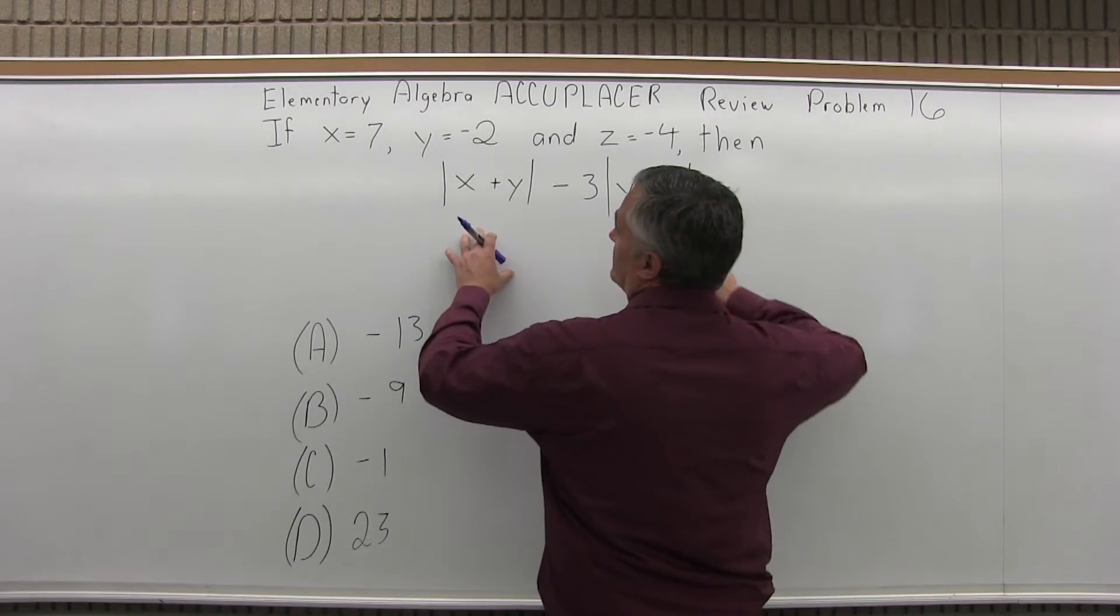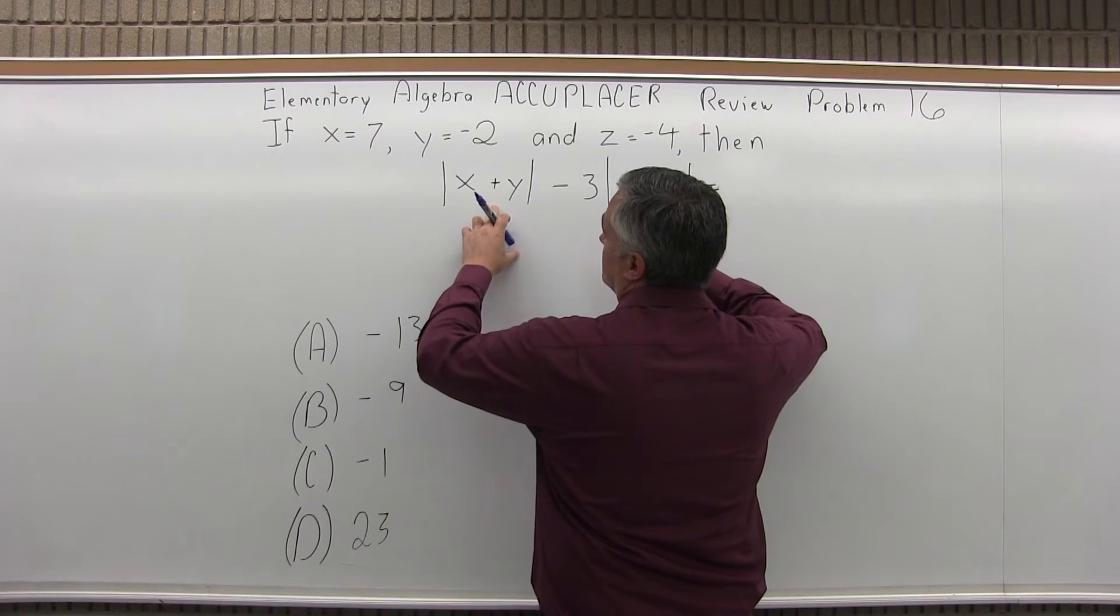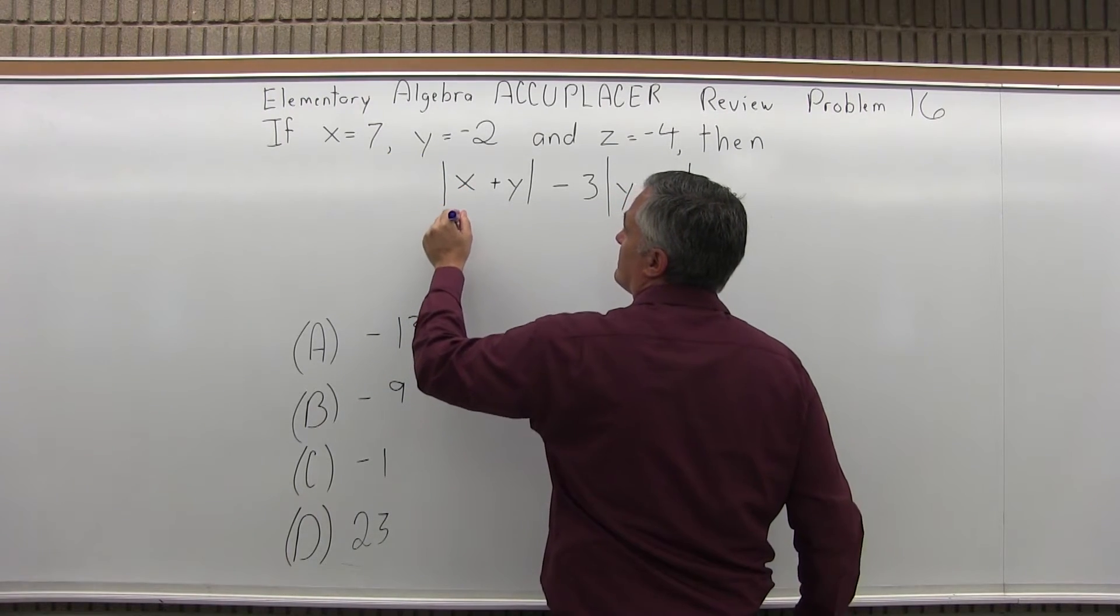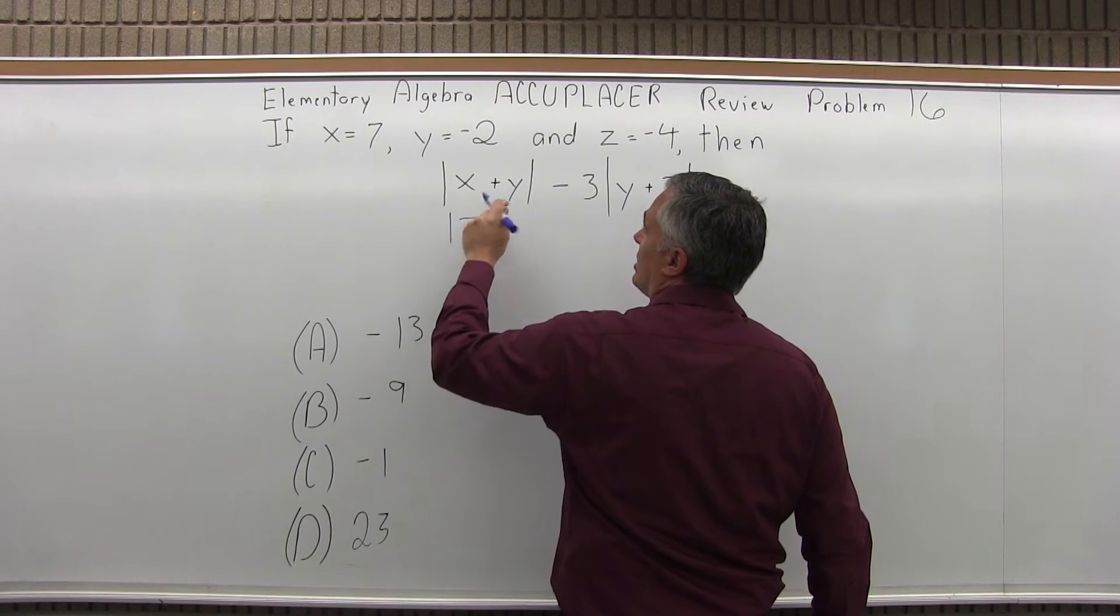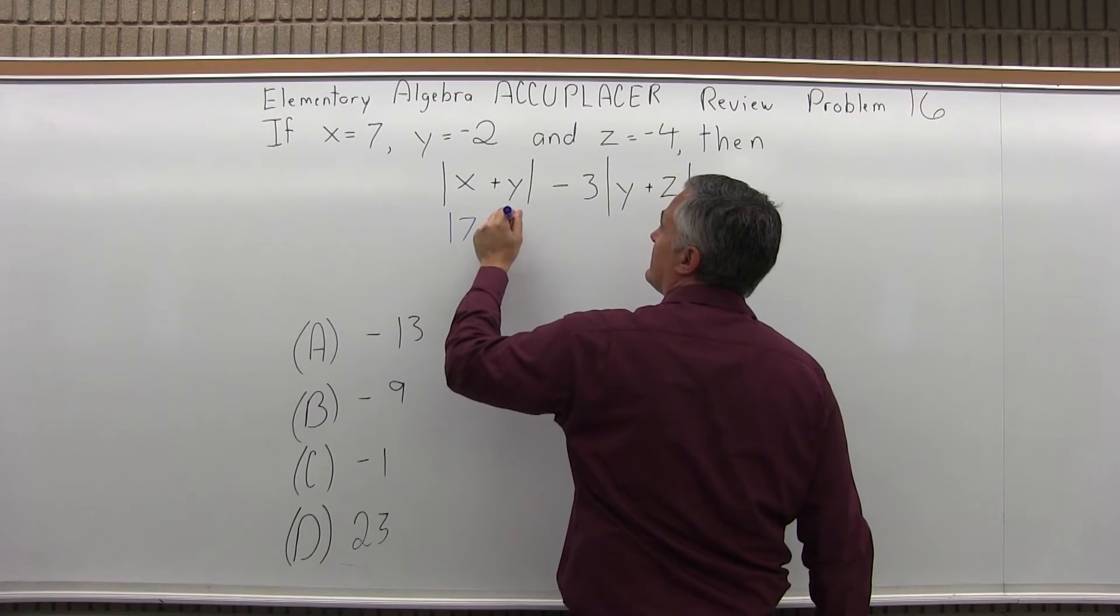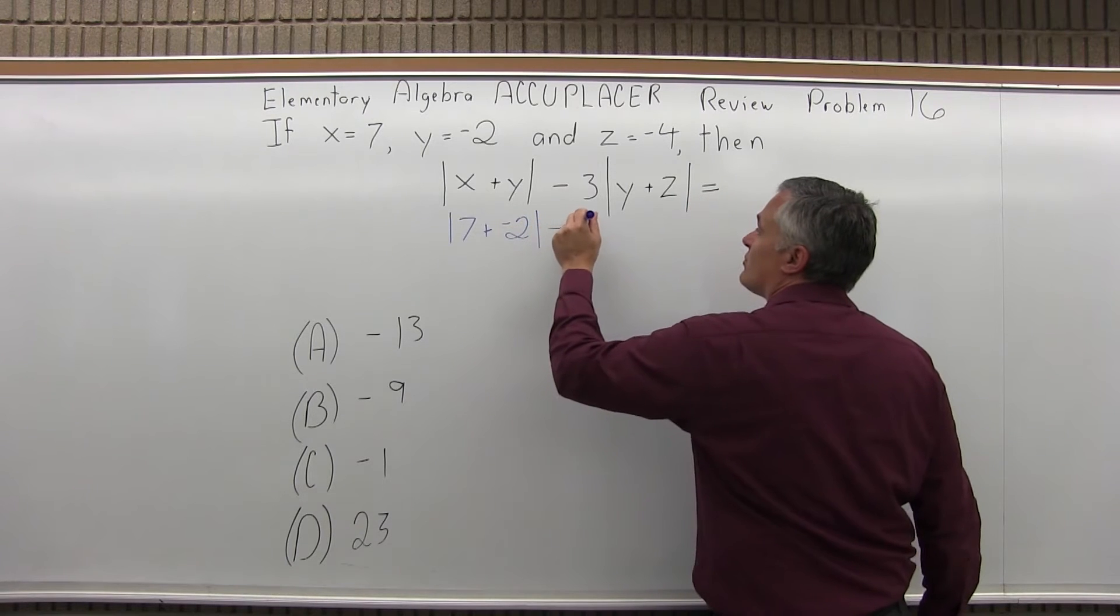To start this process, let's put in the values of x, y, and z. So x is 7, we're going to have absolute value of 7 plus y, y is negative 2, and then minus 3.